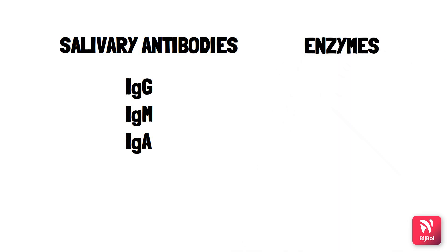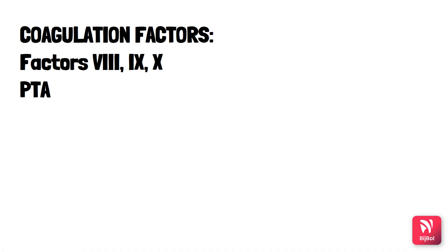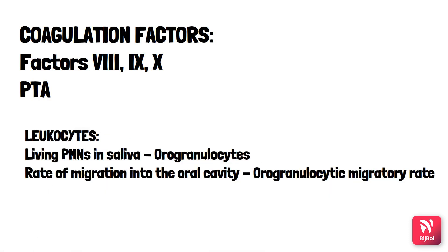Enzymes present in saliva include hyaluronidase, lipase, beta-glucuronidase, chondroitin sulfatase, aspartate aminotransferase, and alkaline phosphatase. Saliva also contains coagulation factors 8, 9, and 10, as well as plasma thromboplastin antecedent. Saliva contains desquamated epithelial cells and leukocytes. Polymorphonuclear leukocytes exit through the lining of the gingival sulcus into saliva; living PMNs in saliva are called orogranulocytes, and their rate of migration into the oral cavity is the orogranulocytic migratory rate.